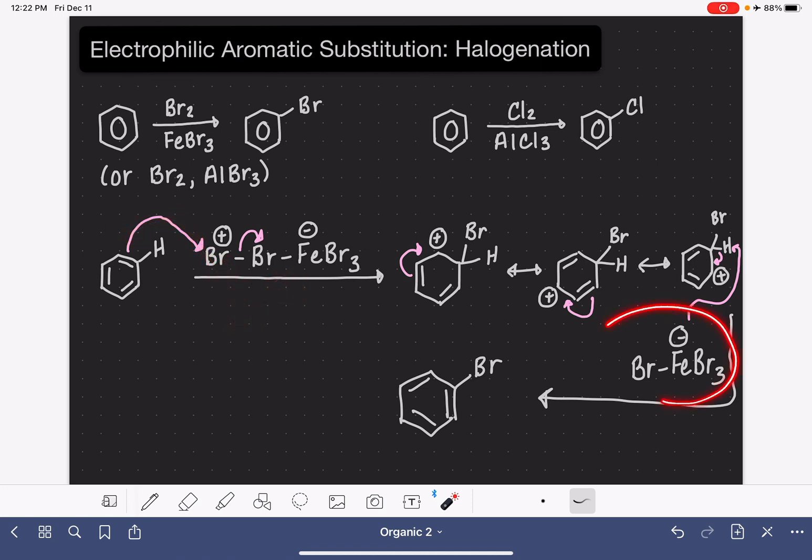And then over here in this last step, again, simplify. Normally, we just write base instead of writing this whole complex out. And here's the product of this halogenation reaction.